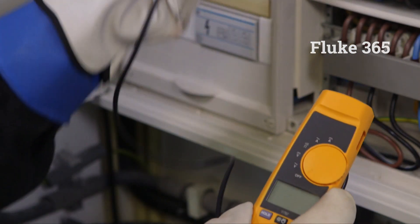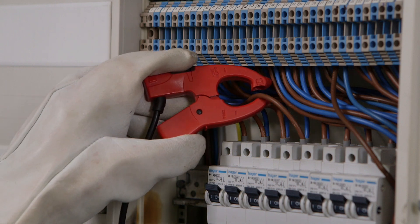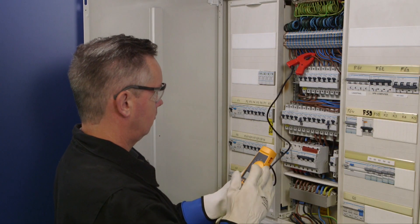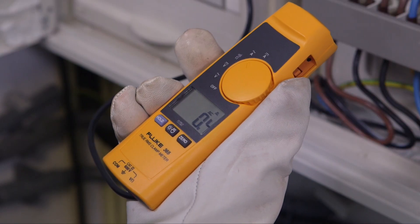The 365's thin, small jaw is detachable with a flexible lead which makes gaining access to wires and viewing the display easier than ever.